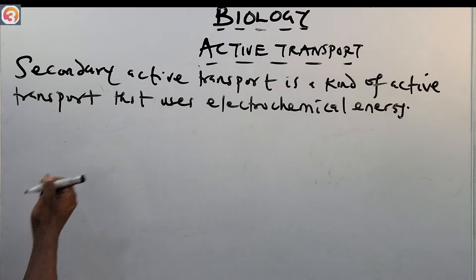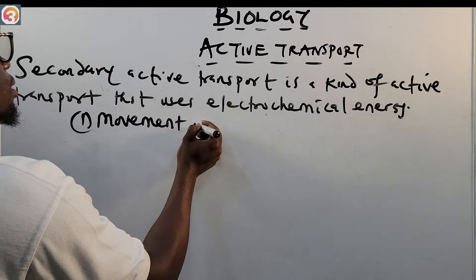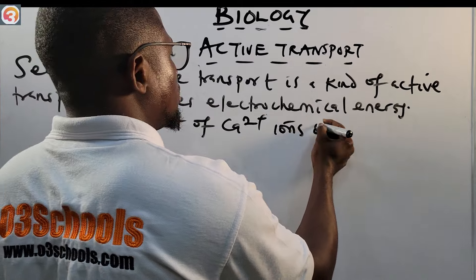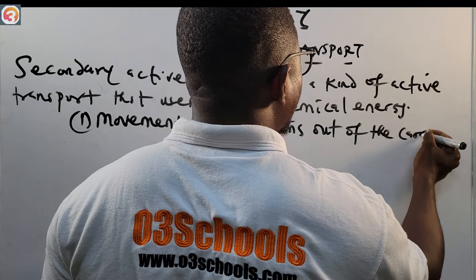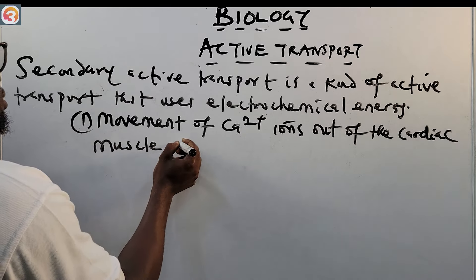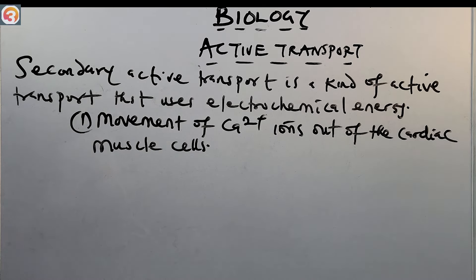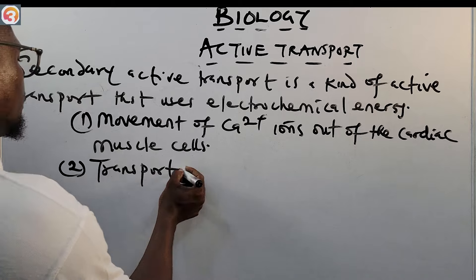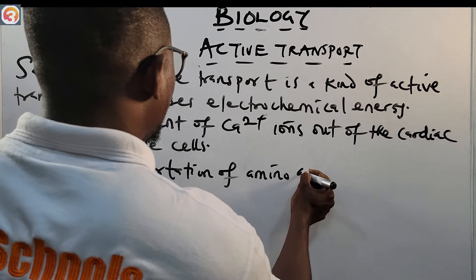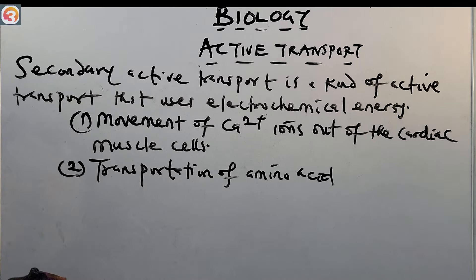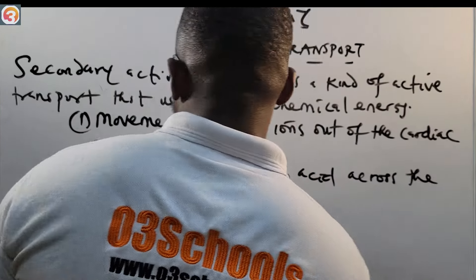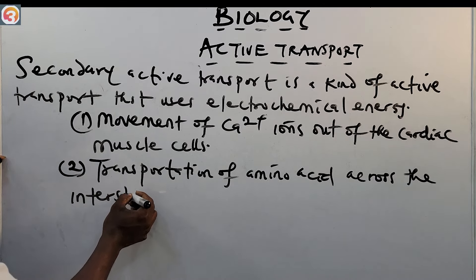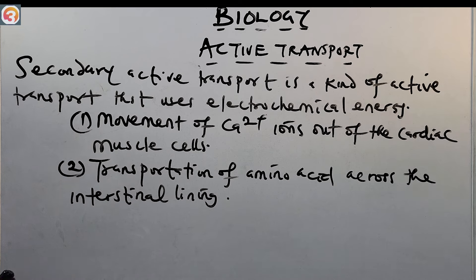Let's look at several examples of active transport. Number one is the movement of Ca2+ ions out of the cardiac muscle cells. Number two is transportation of amino acids across the intestinal lining of the human gut.